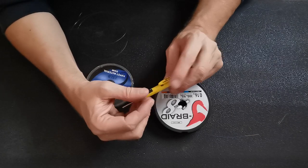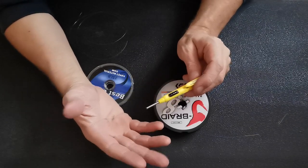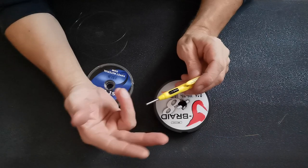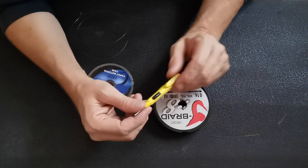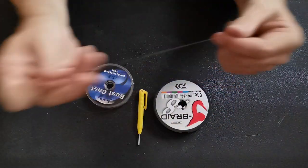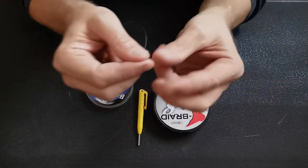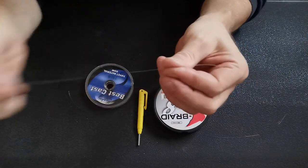You know, there's nothing worse when you snap off or you get a wind knot and you've got to retie your point, your bit of leader that goes to your lure.